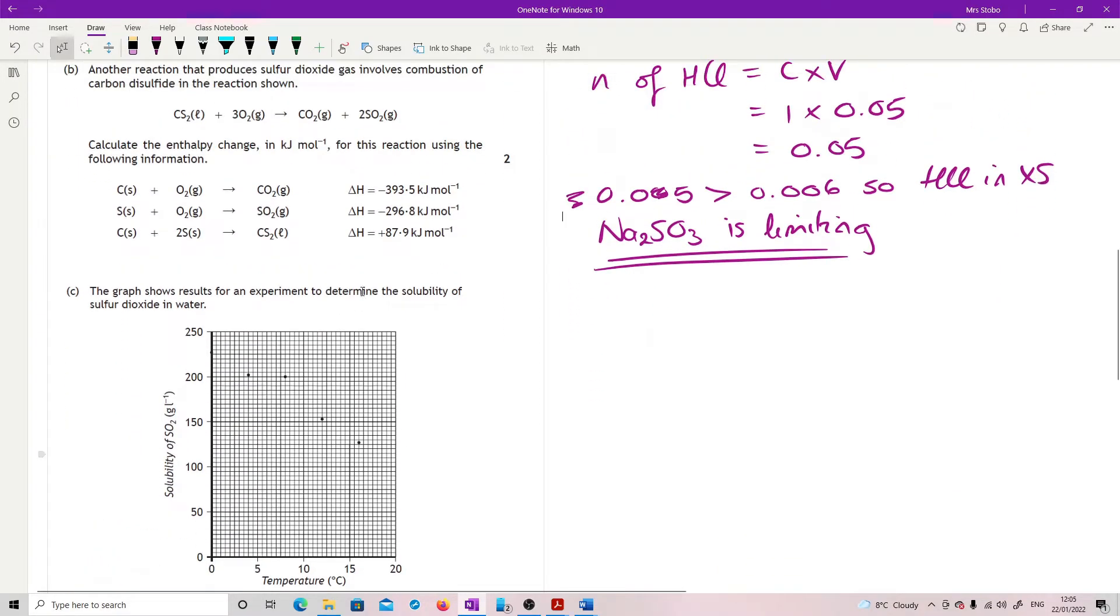Another reaction that produces sulfur dioxide gas involves combustion of carbon disulfide. Calculate the enthalpy change in kilojoules per mole for this reaction using the following information. So a Hess's Law one. I don't know if I've totally given myself enough space for this. So we can go algebraic or we can go full. So let's do the algebraic first because that takes up less space. And then I might wipe it out and do the other one.